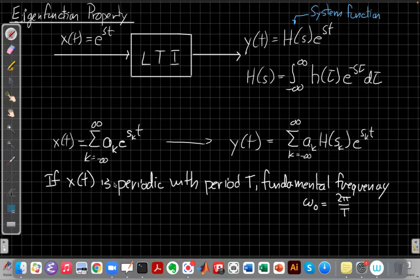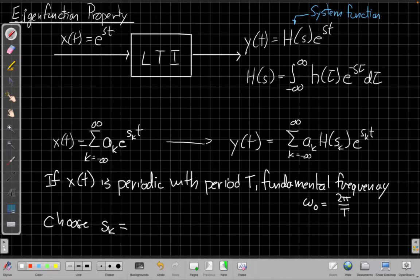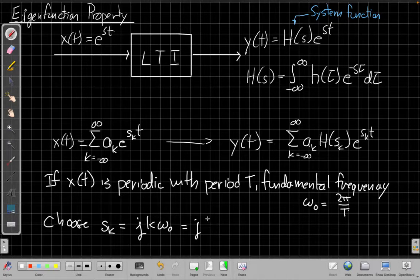And so what we want to do, or what Fourier's idea is, we're going to choose the s sub k's, the family of exponents we want to use in our exponential signals, to just be different multiples of that fundamental frequency. Right, so you could also say this is j times 2 pi k over T. And we call the kth choice the kth harmonic, so we have the different properties of the fundamental signal.